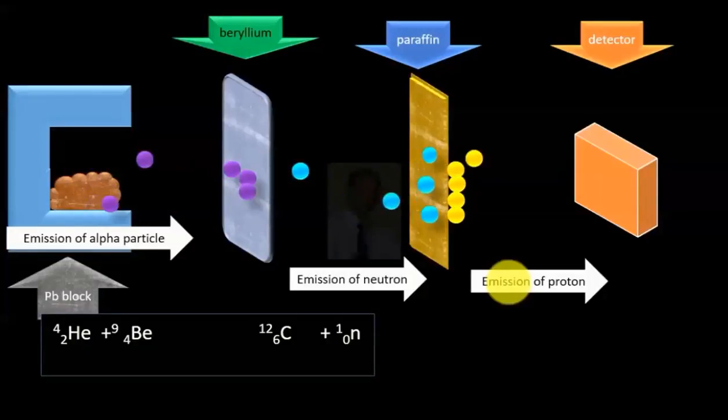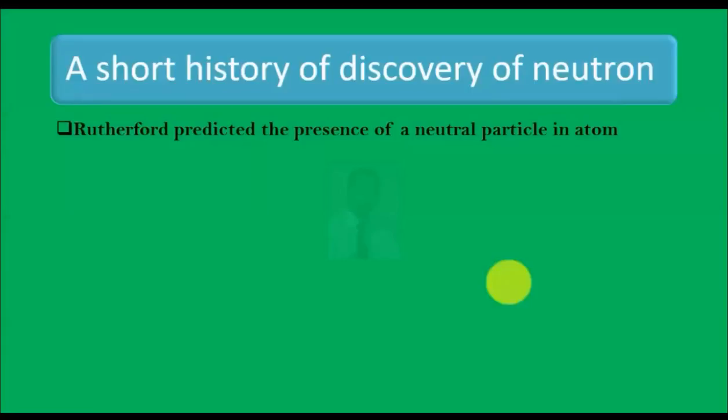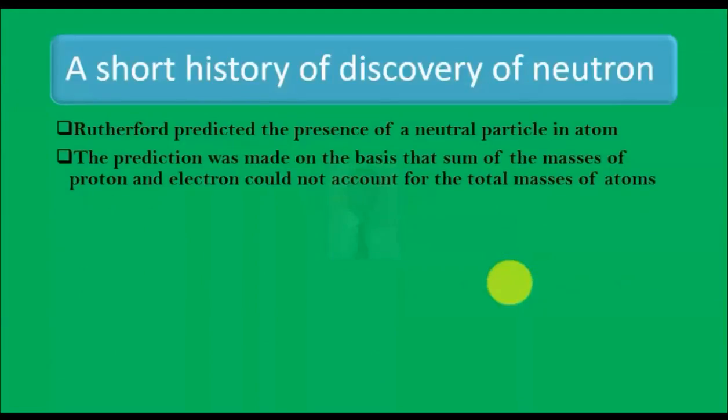I will discuss a short history of discovery of the neutron. It was Rutherford who predicted the presence of a neutral particle in the atom. The prediction was made on the basis that the sum of the masses of proton and electron could not account for the total mass of the atoms.